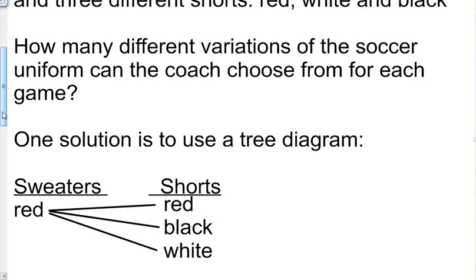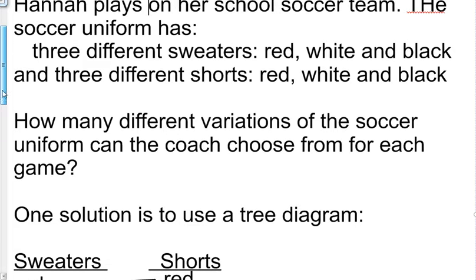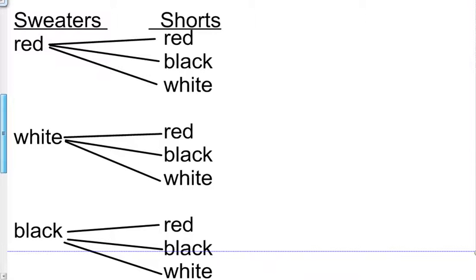One solution is to use a tree diagram. So to do that we have sweaters and shorts. The three colors of sweaters are red, white, and black. The red sweater can be matched with the red shorts, the black shorts, or the white shorts. The white sweater can be matched with all three kinds of shorts again, and the black sweater can be matched with all three kinds of shorts again.